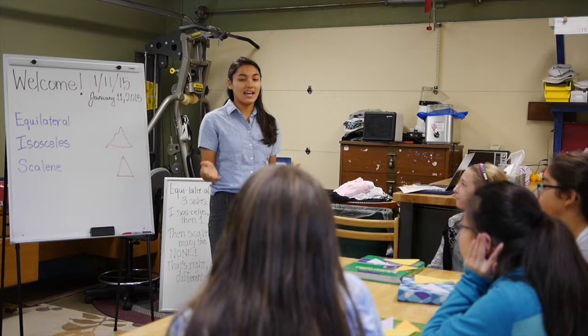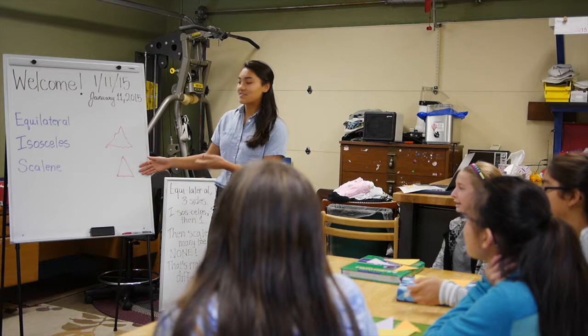So is this a triangle? No. How about this one? Yes. Very good. So that is important. A triangle has three sides and straight edges.